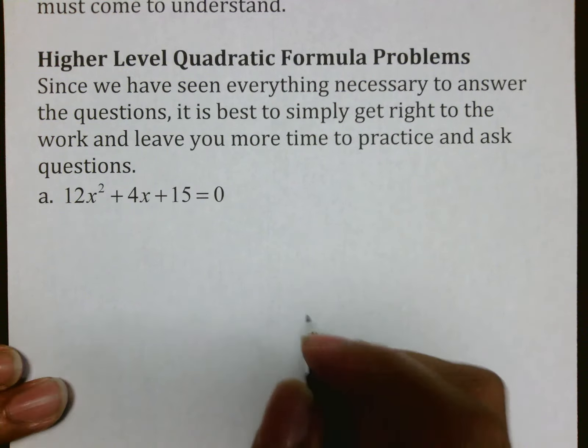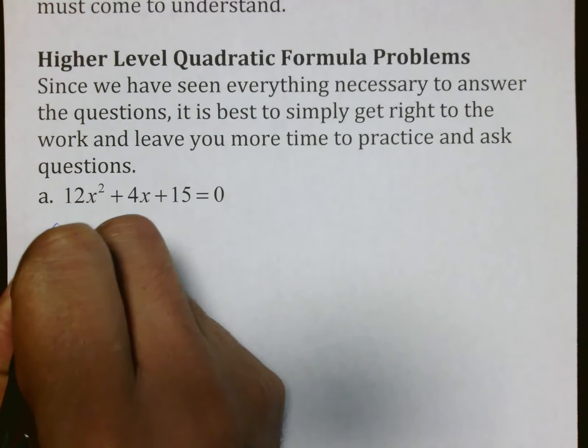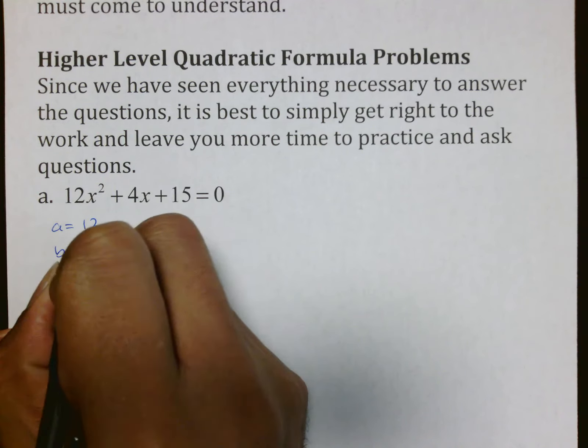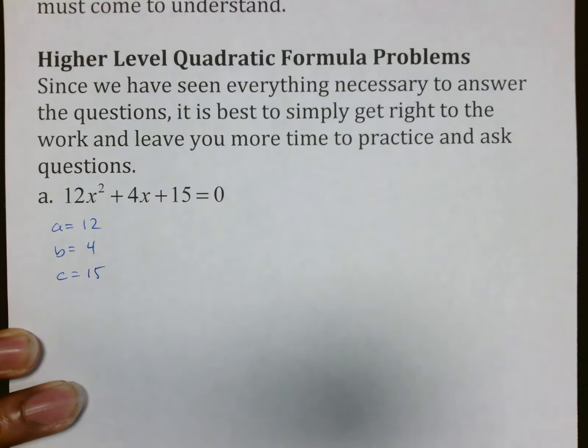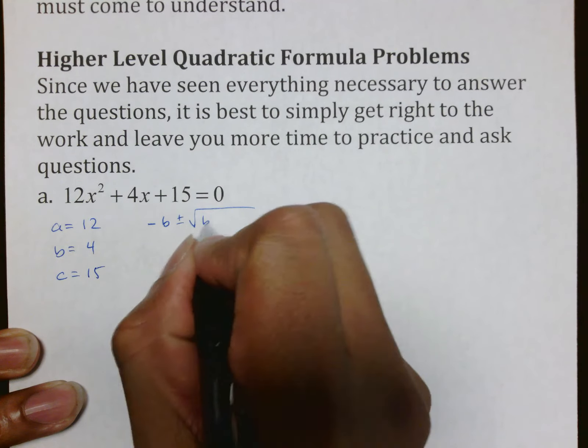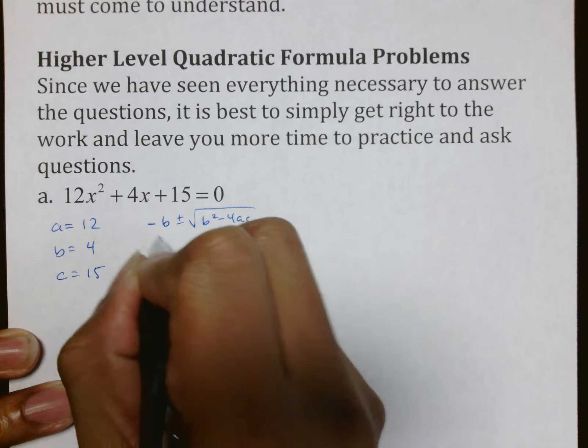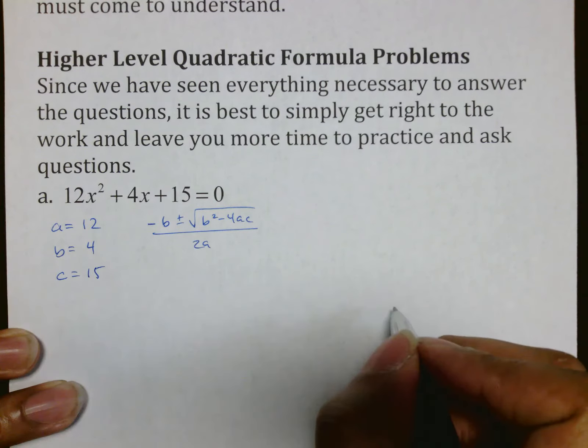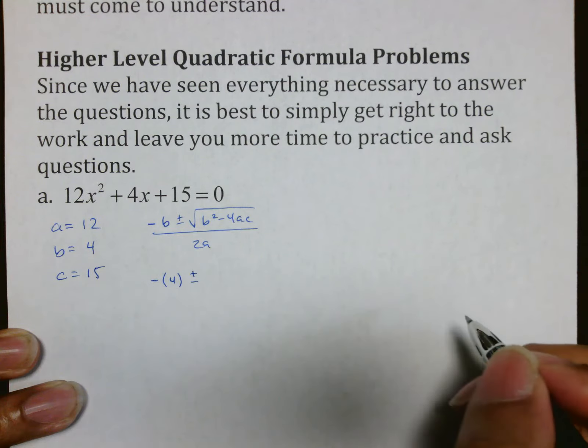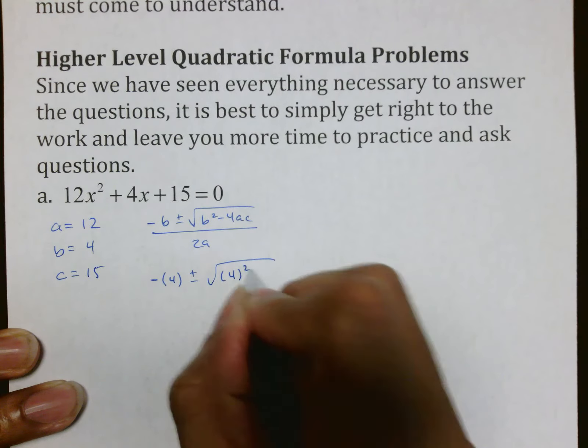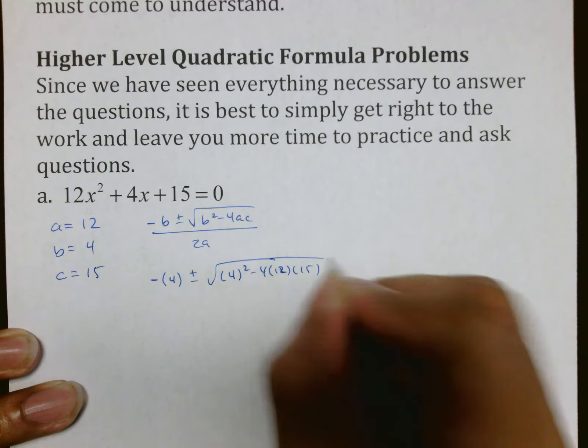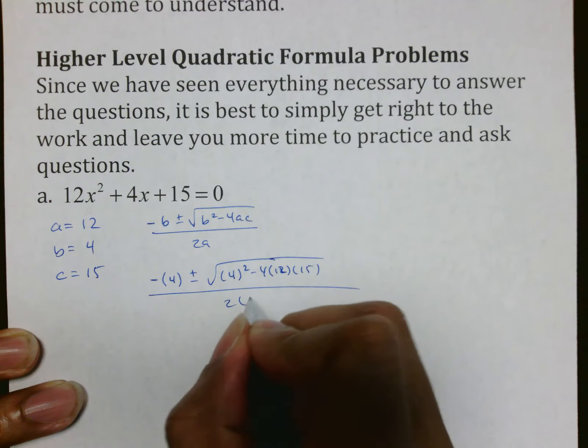12x² + 4x + 15 = 0. Again, I'm going to use the same tactics where a is equal to 12, b is equal to 4, and c is equal to 15. I will write my formula out as negative b plus or minus square root of b² minus 4ac all over 2a, which turns into negative 4 plus or minus square root of 4² minus 4 times 12 times 15 all over 2 times 12.